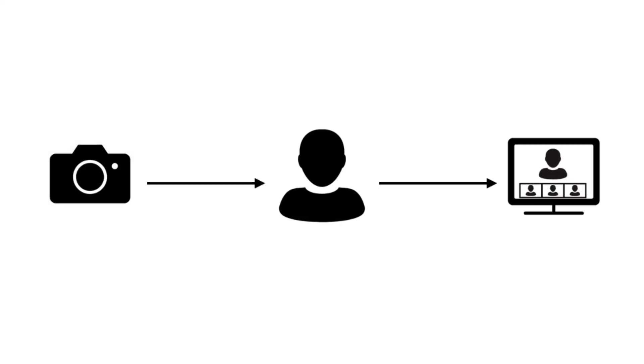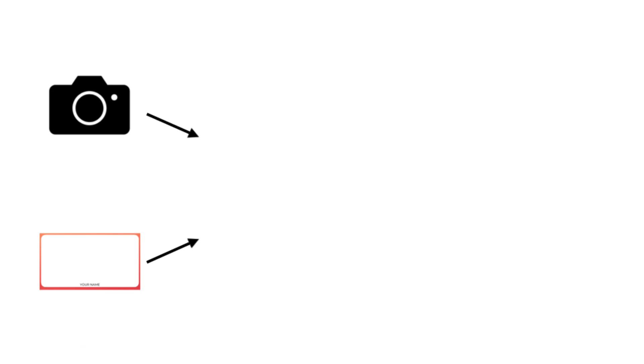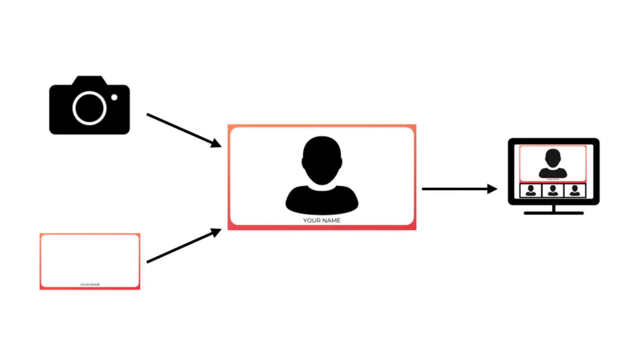I think it helps to understand what you are actually doing. I thought it was best to explain this in terms of a virtual camera. If you understand how a virtual camera works, you know you have an option to combine your graphics with your camera. Usually when you go into Zoom, you can pick your camera, which shows your face. But with a virtual camera, you can take your camera and your overlays and graphics, put them together with your streaming software, and have that show up in your Zoom call.